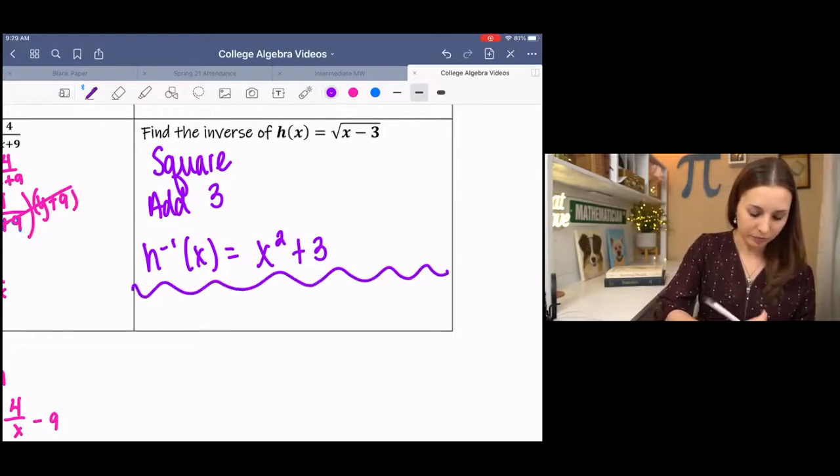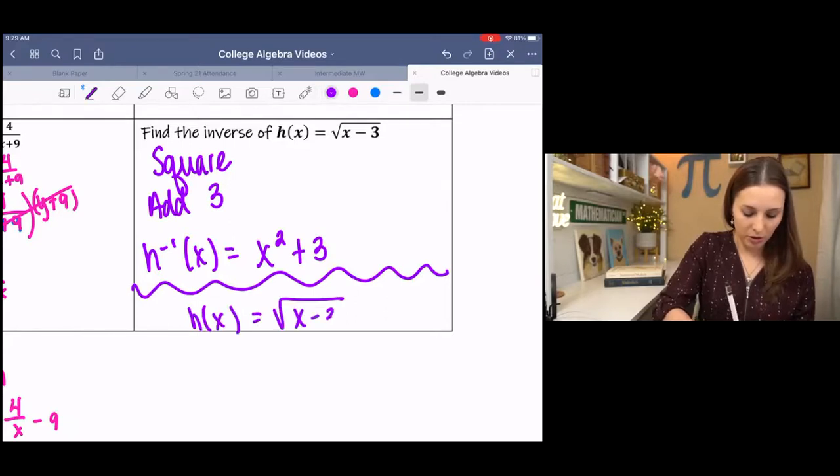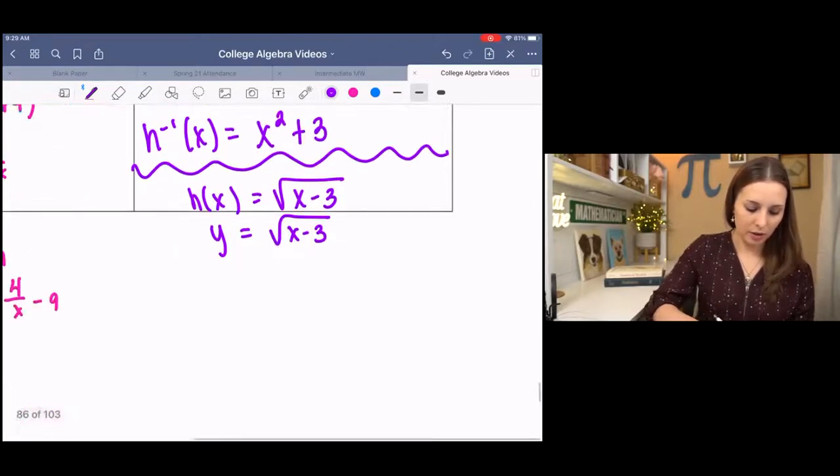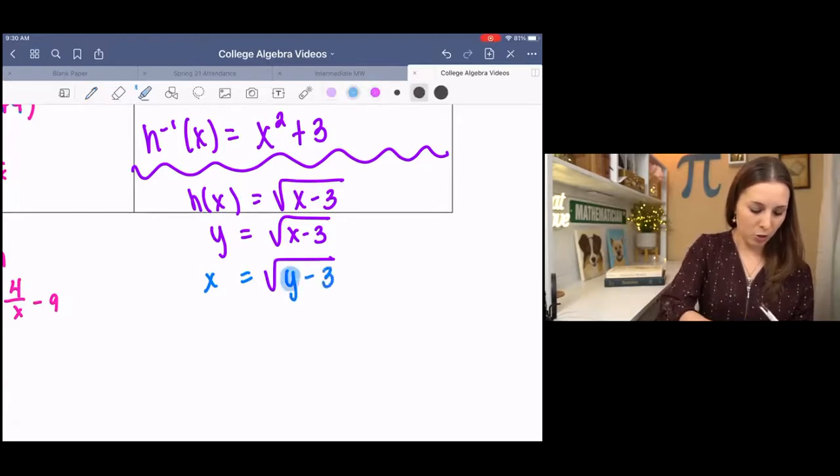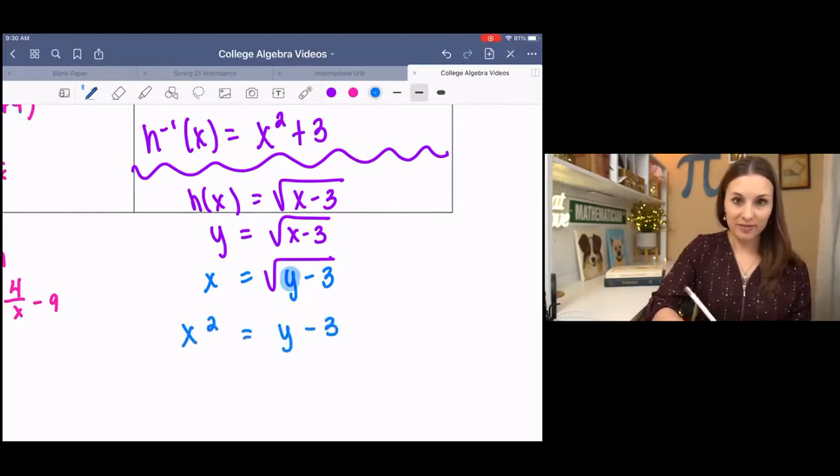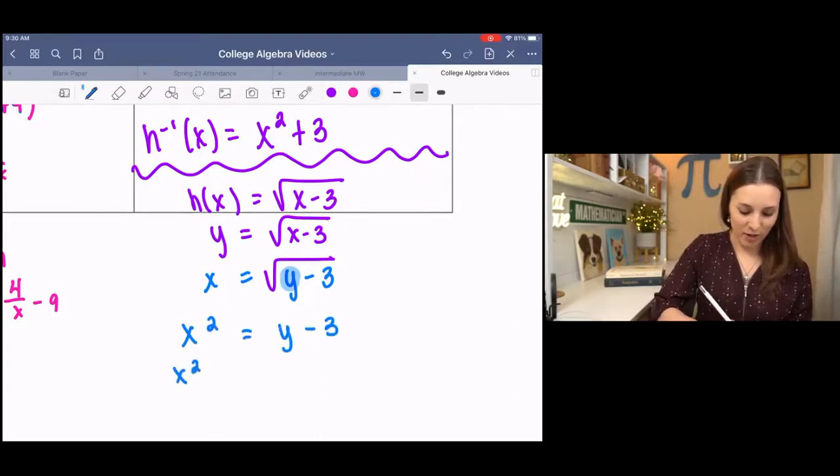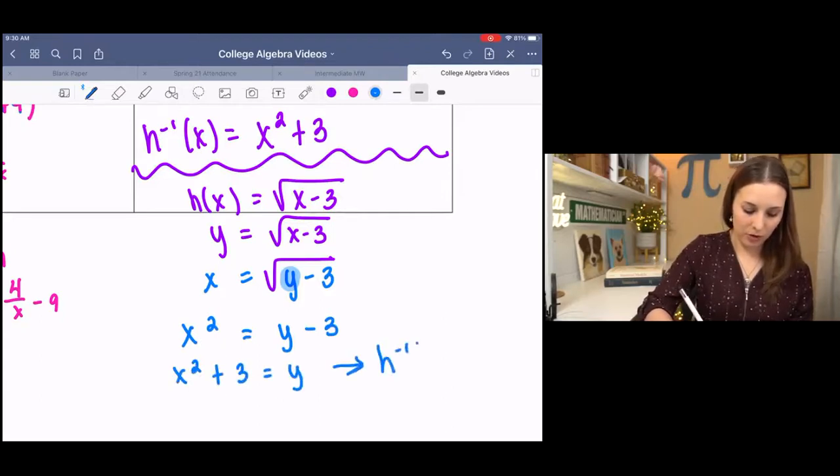Done. The other method, we have our function. This is just a different name for Y. Then we would switch X and Y. And solve for the new Y, which means we would square both sides and add 3. And that is our inverse function.